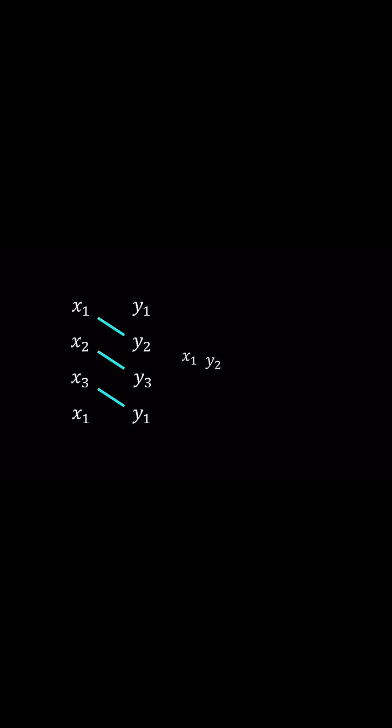Multiply the downward diagonals and add them together. Do the same for the upward diagonals. Multiply them and add the results.